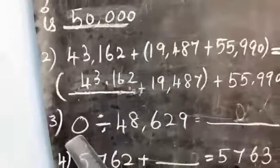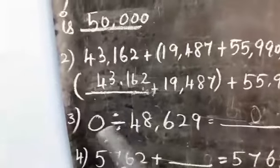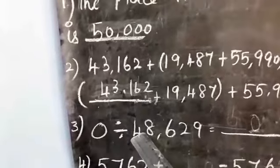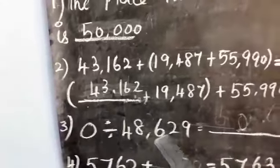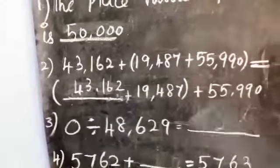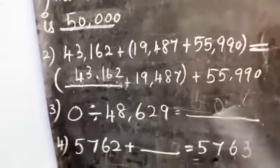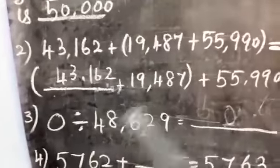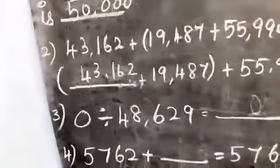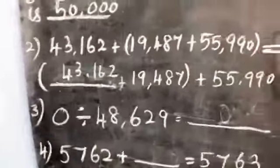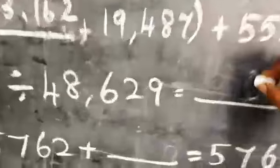Now look at the third sum: 0 divided by 48,629. When we divide 0 from any number, we get the answer 0.